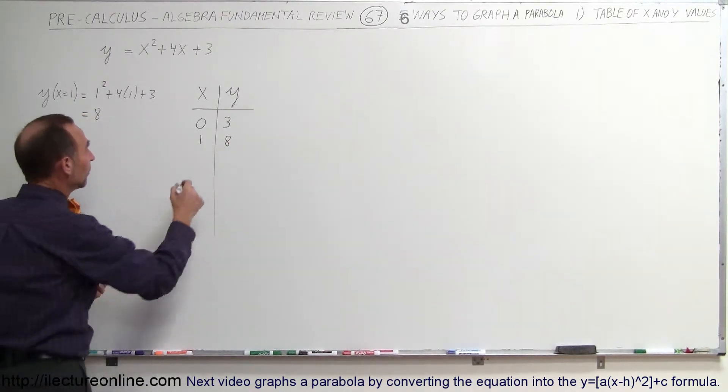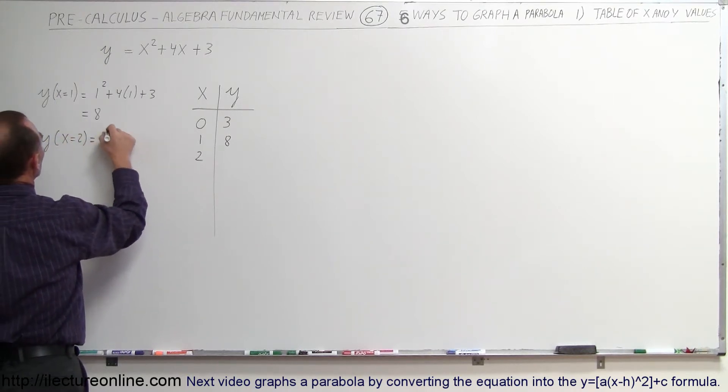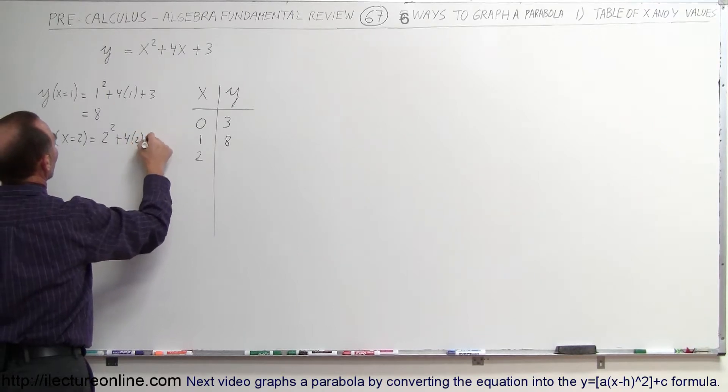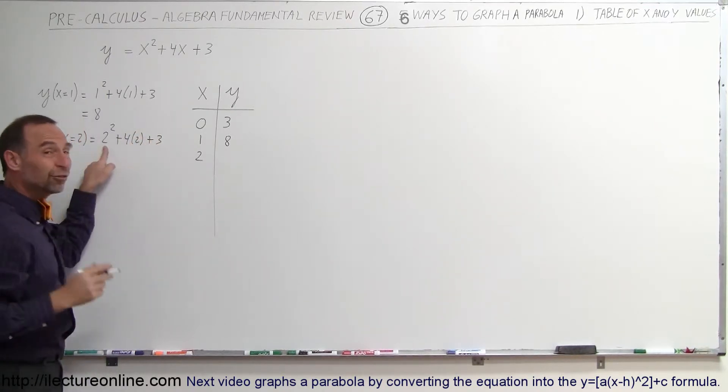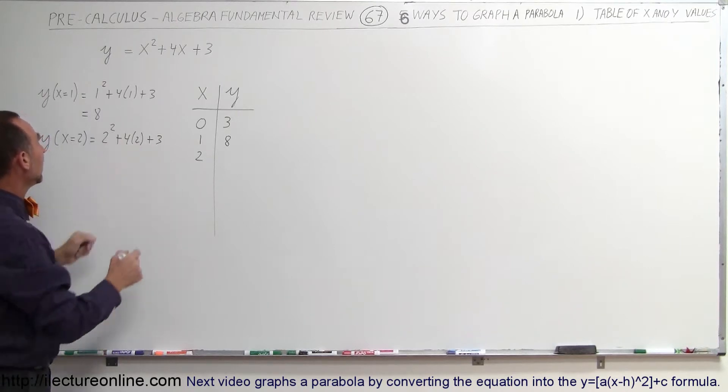All right, let's try another value. What if x is equal to 2? So y, when x is equal to 2, is equal to 2 squared plus 4 times 2 plus 3. So 2 squared is 4. 4 times 2 is 8. 4 plus 8 is 12. Plus 3 is 15.